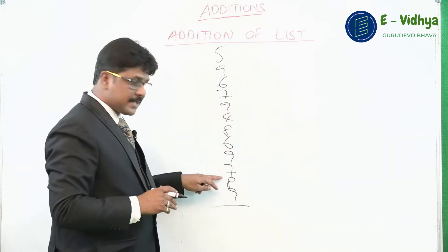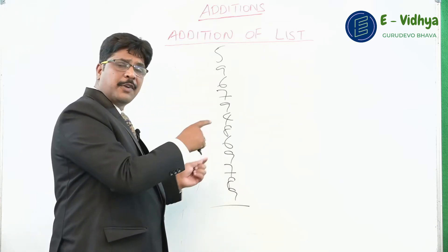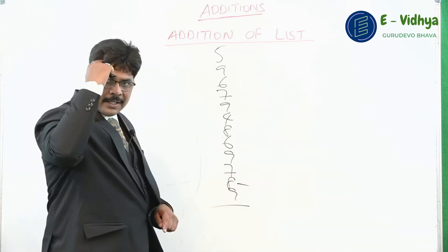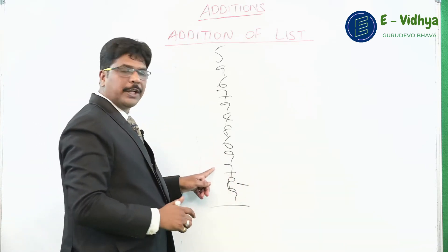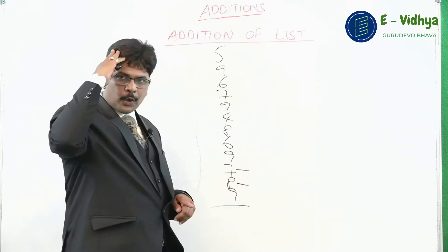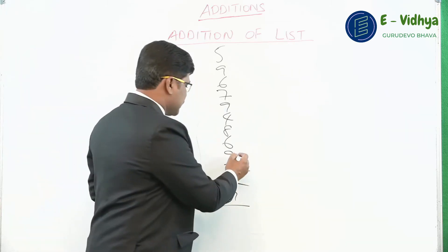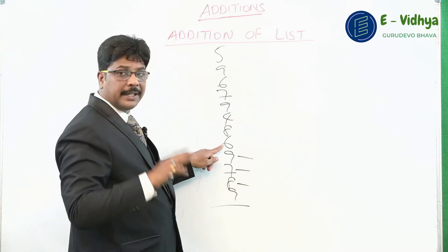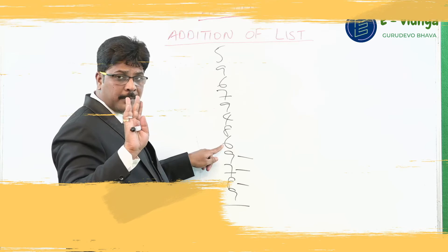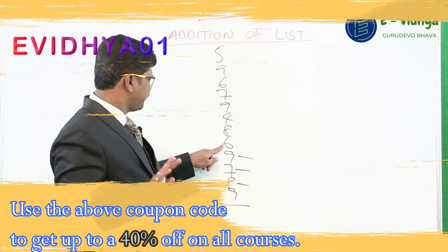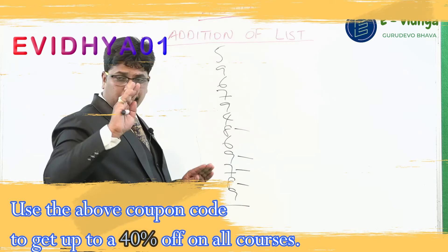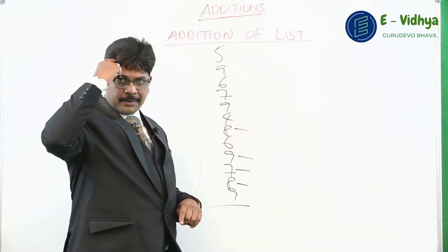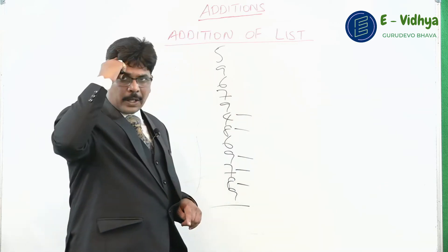Now add 9 plus 8. If you are perfect in end numbers it becomes easy. 9 plus 8 is 17. So put a dash and hold 7 in the mind. Then 7 plus 7 you get 14 — put a dash, hold 4 in the mind. Then 4 plus 9 you get 13 — put a dash, hold 3 in the mind. Then 3 plus 6 you get 9. Don't put a dash for numbers below 10 like 9, 4, or 3. Only when a number goes beyond 10 do you put a dash. So dash, 7 in the mind. Then 7 plus 4 is 11 — dash, 1 in the mind.